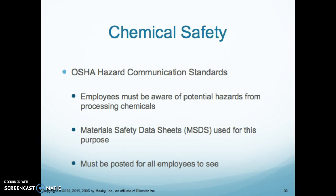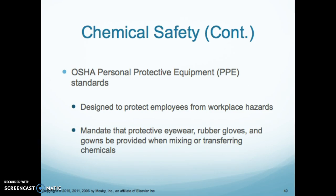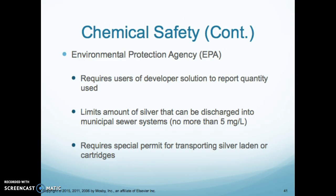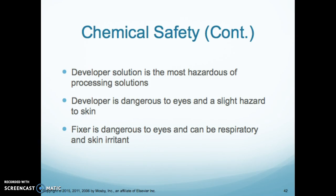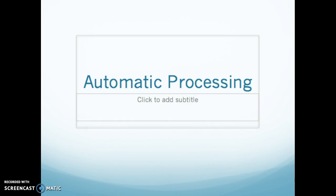For chemical safety, employees must be aware of the potential hazards from processing chemicals. There is an MSDS posted for all chemicals, and you need PPE — protective eyewear, rubber gloves, and gowns — when mixing or transferring chemicals. The EPA requires users of developer solution to report quantity used, limits the amount of silver discharged into water systems, and requires a special permit for transporting silver cartridges. The developer solution is the most hazardous — dangerous to the eyes and a slight hazard to skin. Fixer is dangerous to the eyes and can be a respiratory and skin irritant.